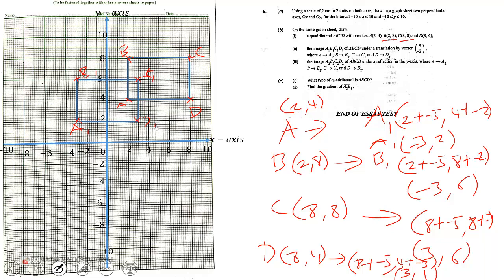Now we have part iii: the image A2B2C2D2 of ABCD under reflection in the Y-axis. A maps onto A2. A (2,4) maps onto A2 - reflecting in the Y-axis, we negate the X coordinate, so we have (-2,4). And B (2,8) maps onto B2, which is (-2,8).